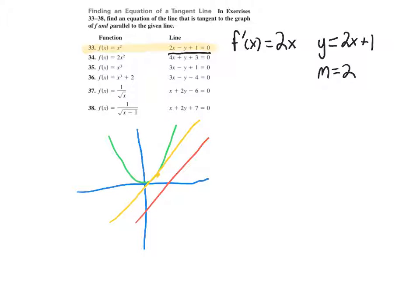Now what do we do? Well, now we want the point that is tangent to the function. So what we are going to do is set our derivative, 2x, equal to our slope of our parallel line, which is 2. So when we do that we get x equals 1.